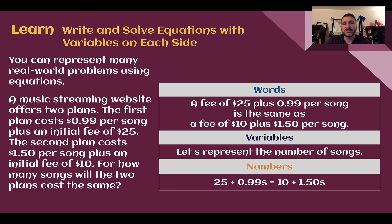For example, a music streaming website offers two plans. The first plan costs 99 cents per song plus an initial fee of $25. The second plan costs $1.50 per song plus an initial fee of $10.